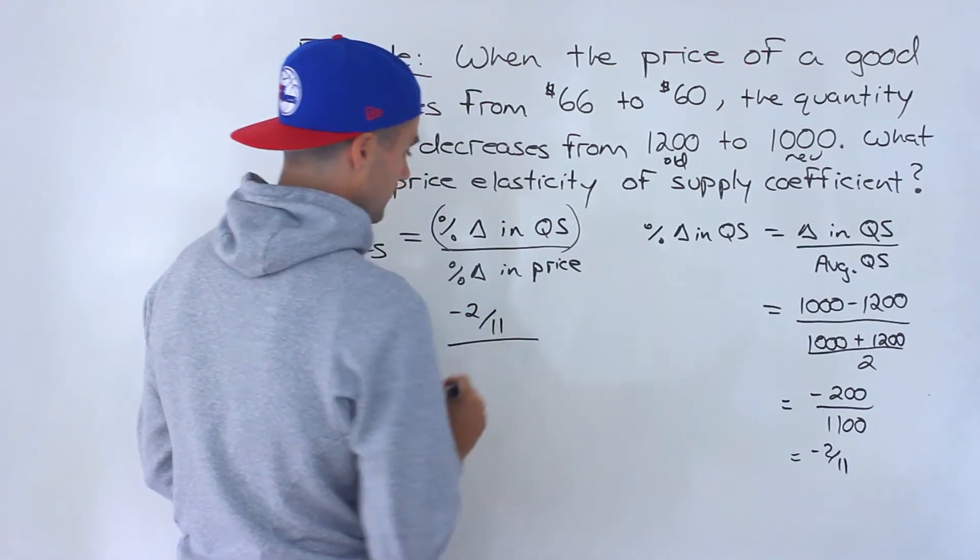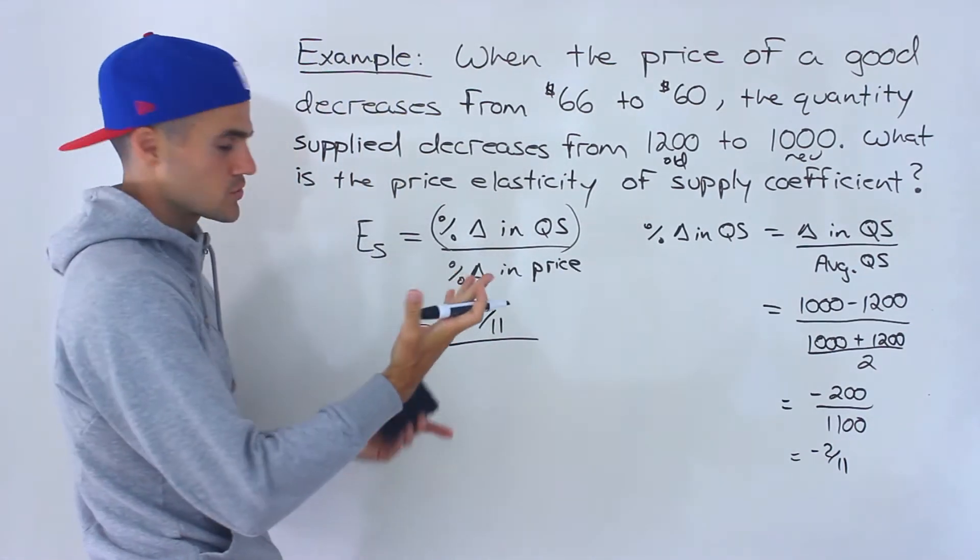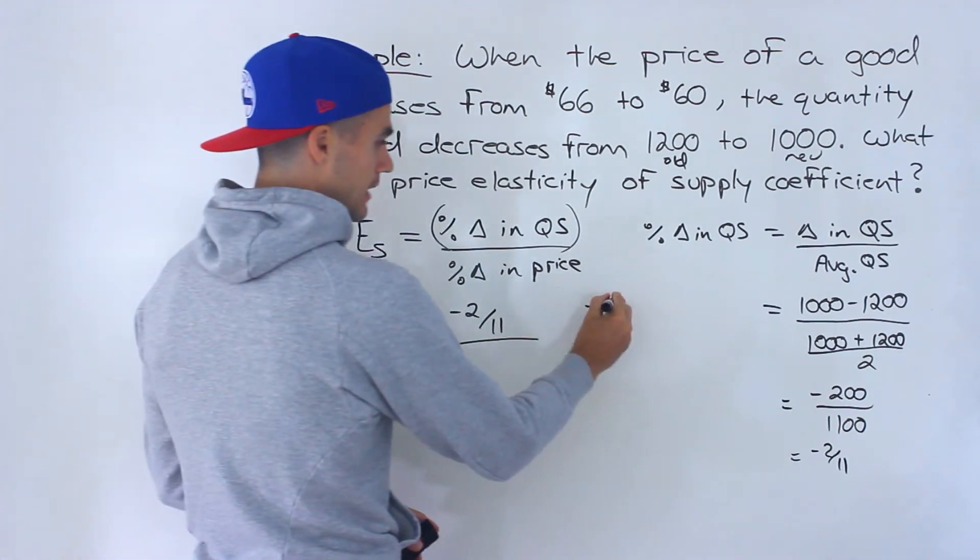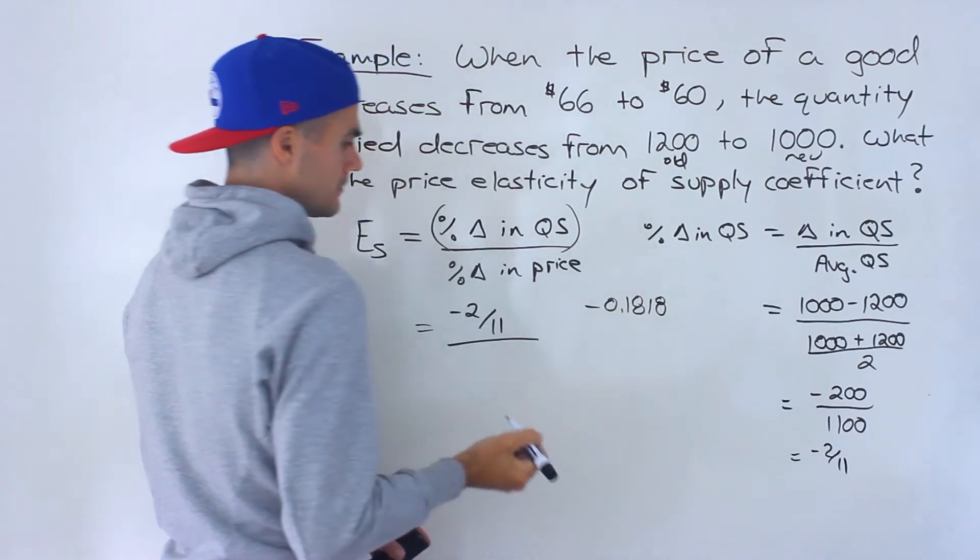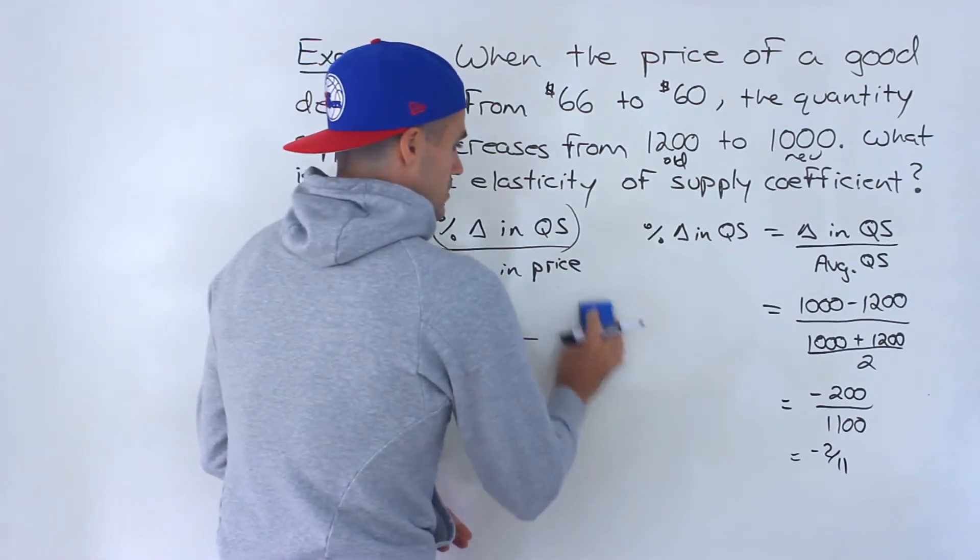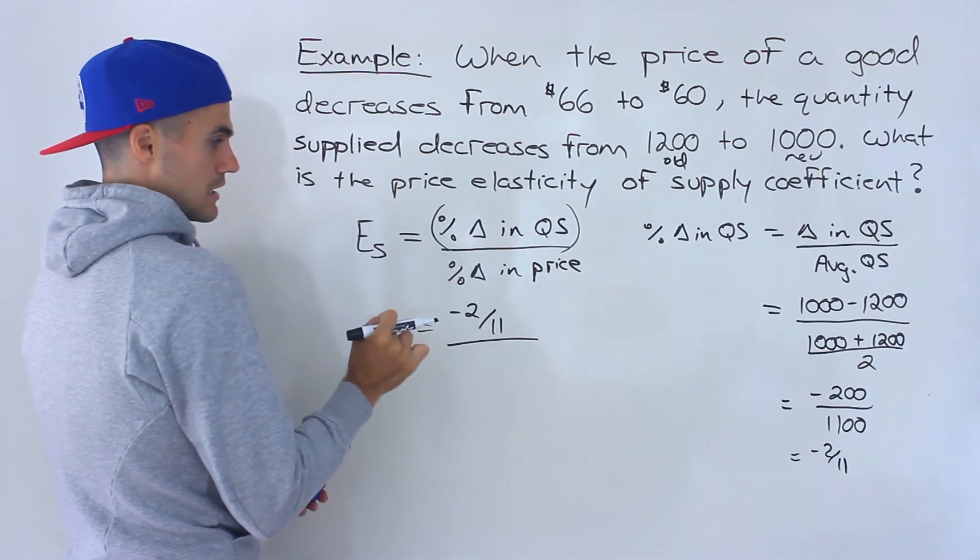You can also put the decimal here if the answers on a multiple choice question are decimals. I think this is like negative 0.1818 repeating. So negative 2 over 11 goes here.